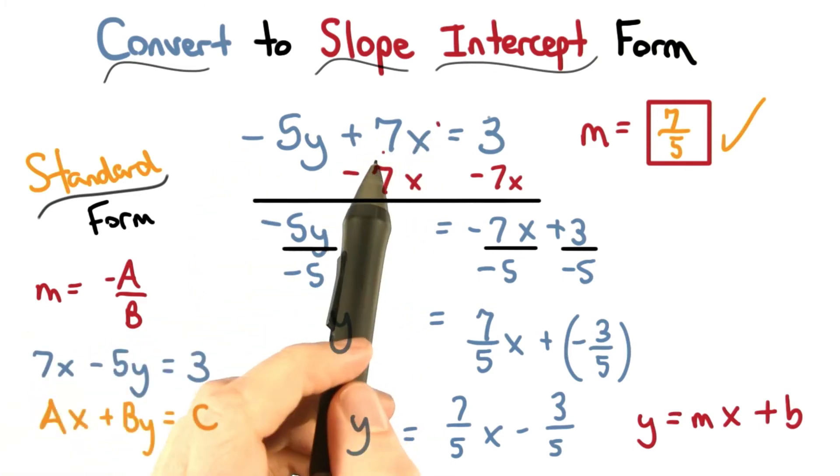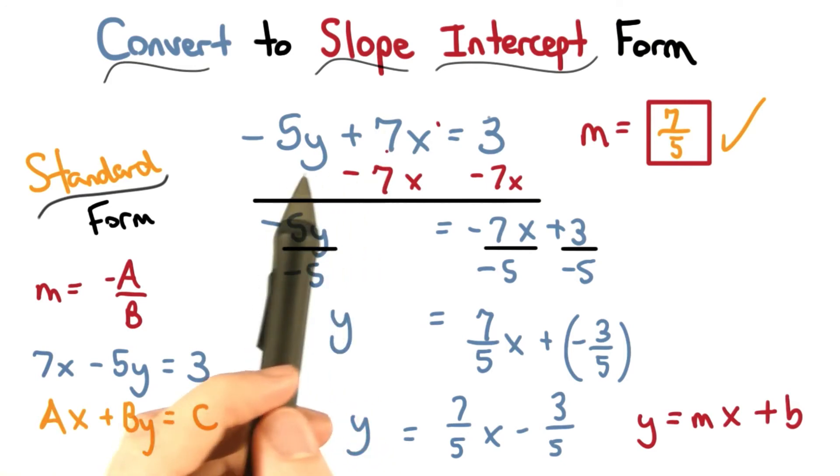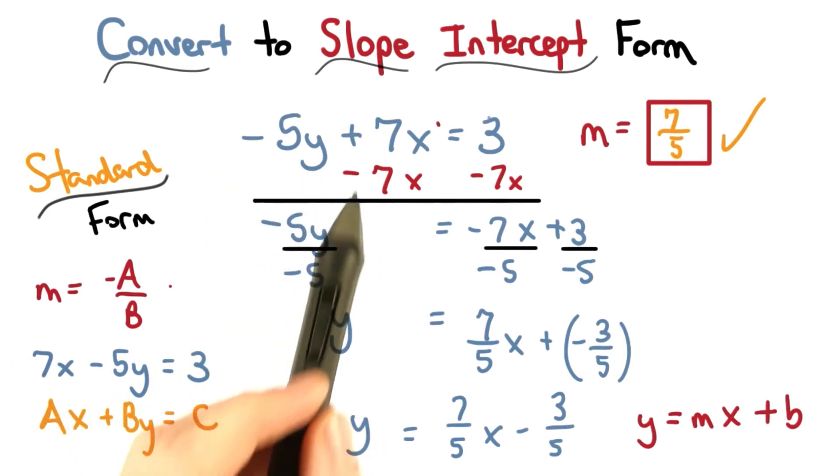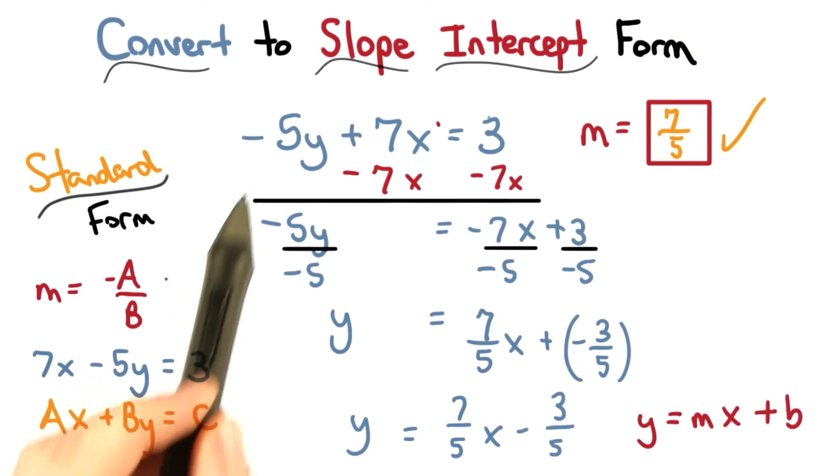The x term should come first. I can switch the place of the 7x and the negative 5y, and I get this equation. Notice the 7x is still positive, and the 5y is still negative.